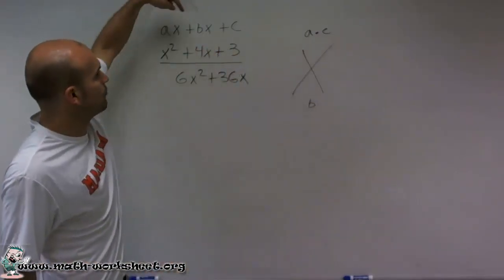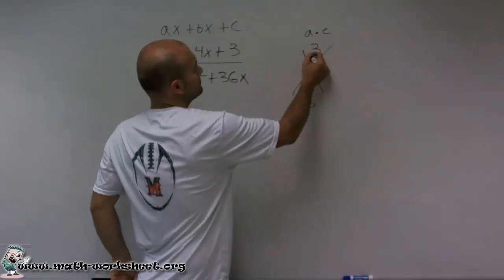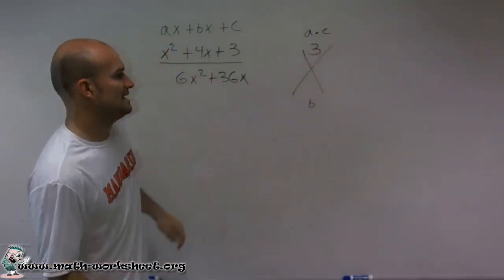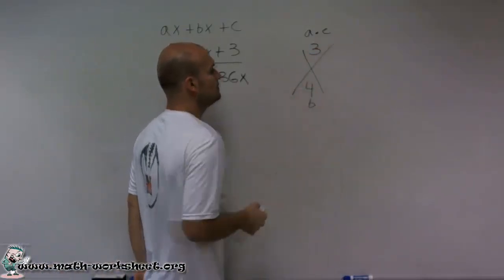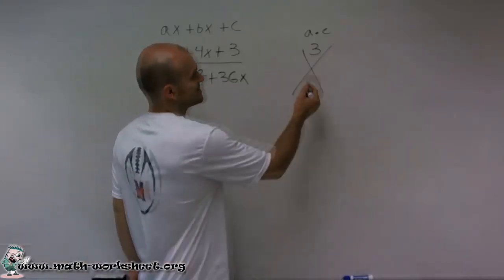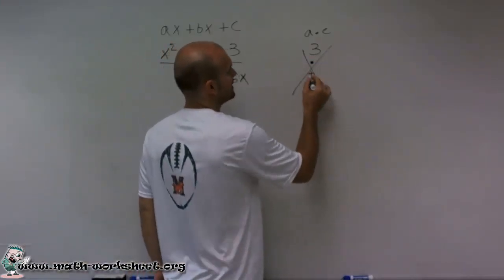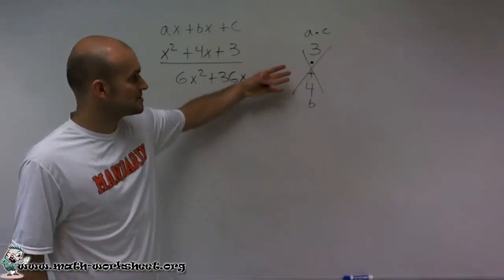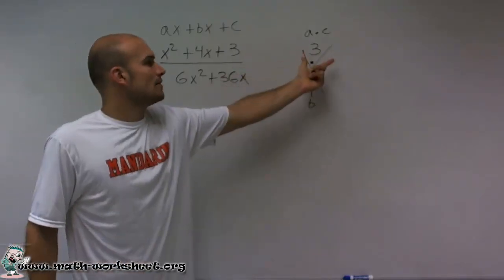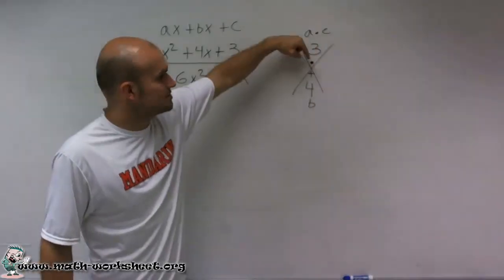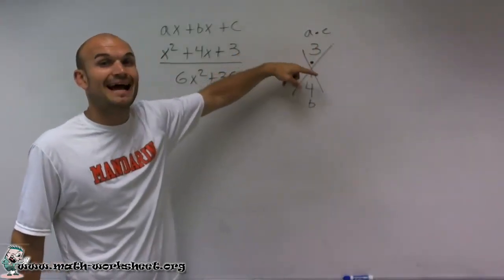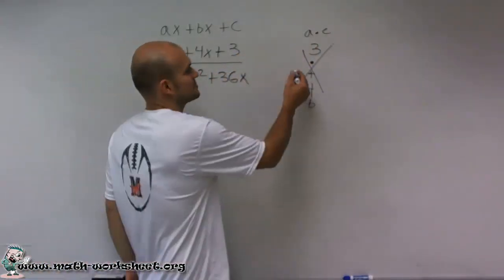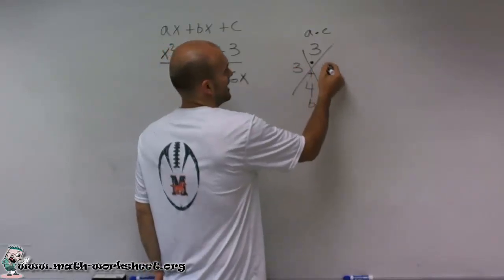So a times c would be 1 times 3, which is 3. And b, in this case, would be 4. Then I use this visual aid to tell me which two numbers, or what two factors of 3 that add to give me 4. So what two numbers multiply to give me 3, but add to give me 4. And you could say those numbers are going to be 3 and 1.